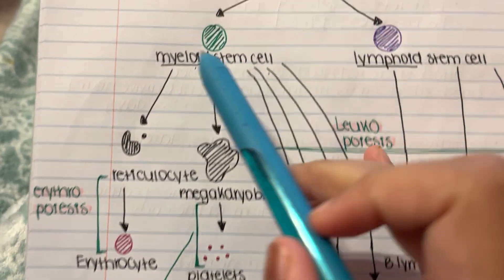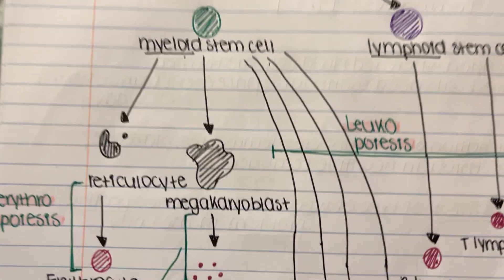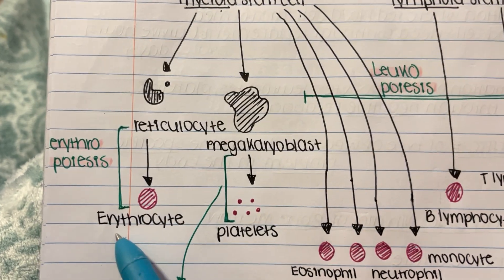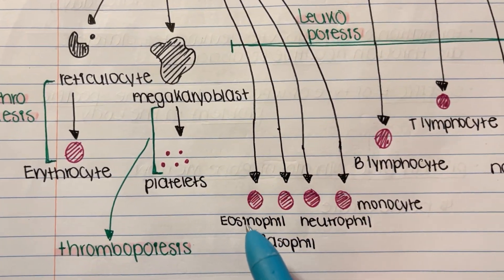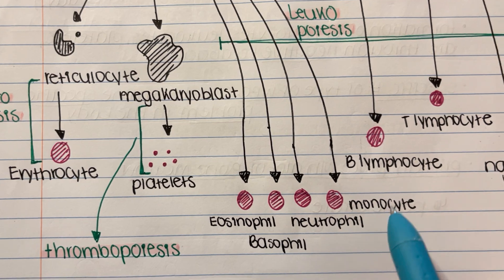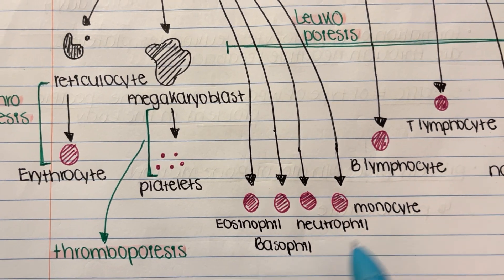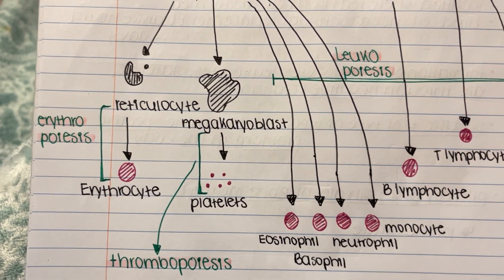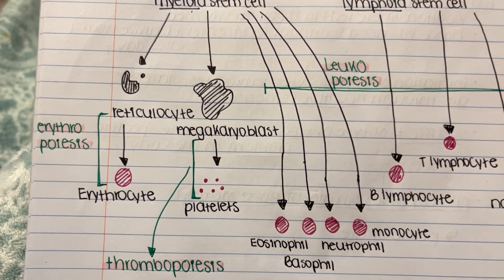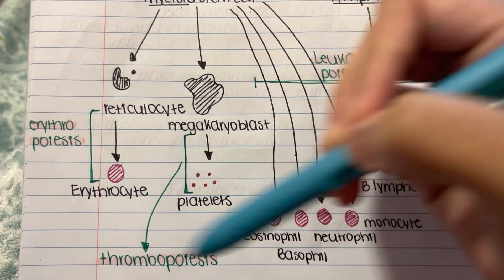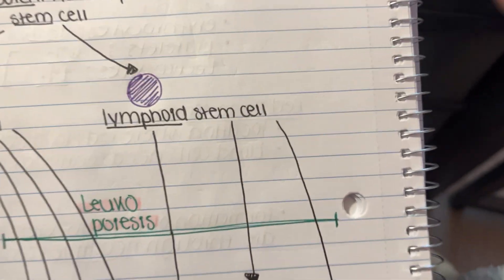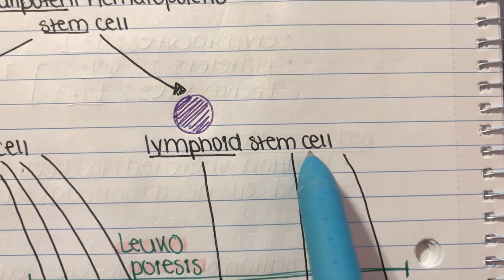That's it for the myeloid stem cell. To review: it produces erythrocytes, platelets, and four different types of white blood cells. Like the math major, myeloid has a lot of avenues.